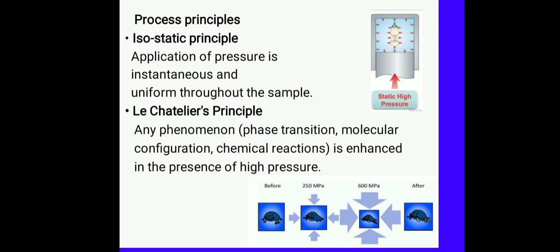Now, let us see which principles are involved in this technique. The first principle is isostatic principle which tells us that the pressure that we are applying throughout the sample will be uniform, as we can see in the image. This causes uniform processing unlike the non-uniformity which is achieved during processing by heat. The second principle is the Le Chatelier's principle which tells us that if there is any process that will happen at molecular level, like phase transition, molecular configuration and chemical reaction, like gelatinization in starch, when we increase the pressure, then the reactions will also increase.